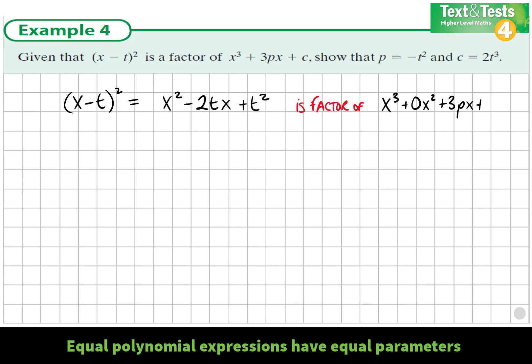If this quadratic is a factor of the given cubic, that means it will divide in with no remainder. I'm going to use the array model to do this division. We have the quadratic factor on top. The x³ term goes in the first box, and the far box is +c, the constant term.